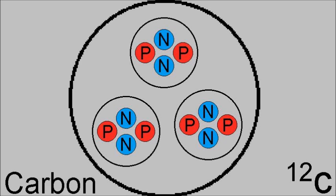Carbon-12 is the most common form of carbon, consisting of about 98.89% of all carbon atoms in the universe. It has an atomic number of 6 and a particle number of 12, consisting of 6 protons and 6 neutrons. It has an atomic weight of 12.000, and it is stable.